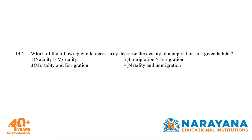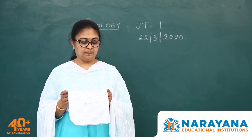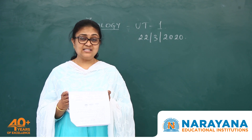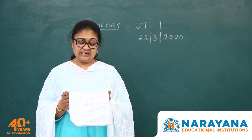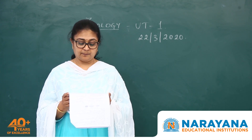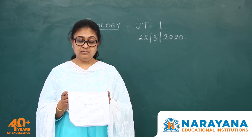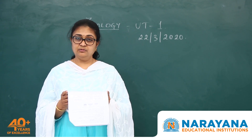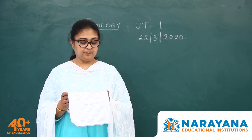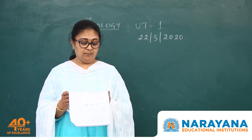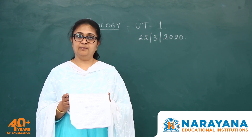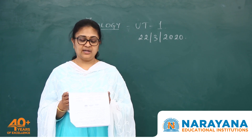Question 147: which would necessarily decrease the density of a population in a given habitat? Option 1 — natality more than mortality — would increase the population density. Option 2 — immigration more than emigration — would also increase the population. Option 3 — mortality and emigration both cause removal of organisms from the population, hence density decreases — is the correct answer. Option 4 — natality and immigration — both contribute to an increase.